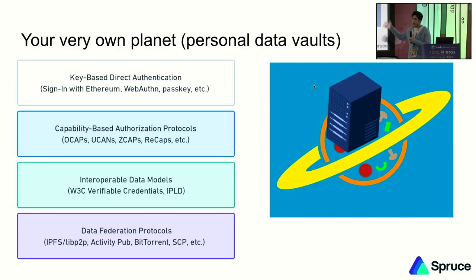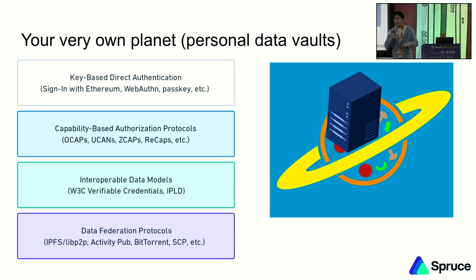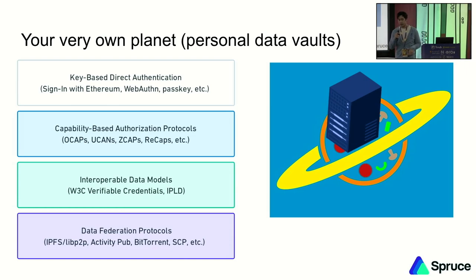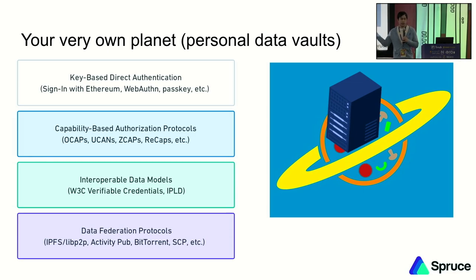This is how we get to the decentralized social media future, where you can make a tweet and that data packet you sign off on is authoritative — not the entry in the database of the tweet host website, but the thing that you cryptographically signed off on. And also the revocation list that you control somewhere, maybe in an L2 smart contract — you can revoke it there. Maybe it's in your data vault.